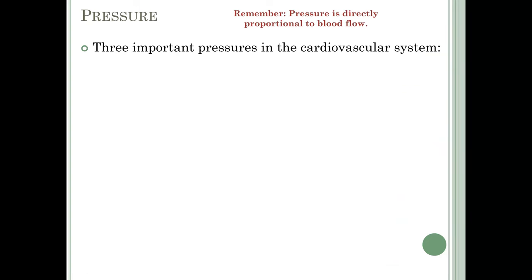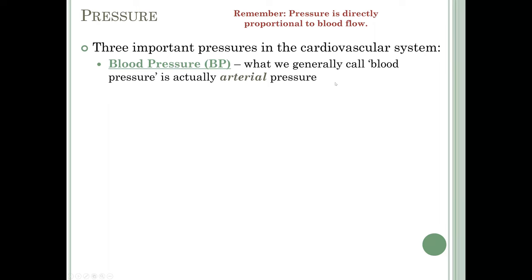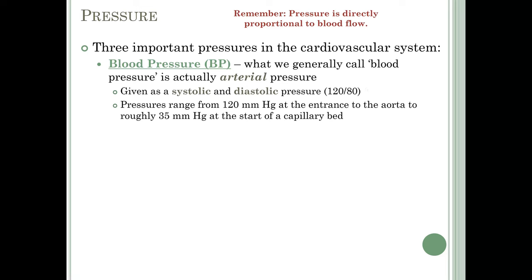Now let's look at pressure, which is directly proportional to blood flow. There are three important pressures in the cardiovascular system. Blood pressure — what we commonly call blood pressure — is actually arterial pressure, given as systolic over diastolic. Normal blood pressure is 120/80. Pressures range from 120 mmHg at the entrance to the aorta down to roughly 35 mmHg at the start of a capillary bed.